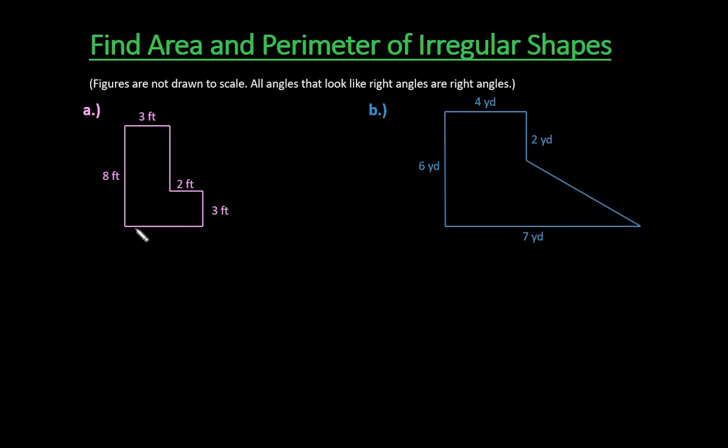For these, they are rectangles, so all of these angles that look like a right angle are indeed right angles. When you have something like this, we can see that this is two rectangles put together. I'm going to split it up into two rectangles this way, mainly for when I get to the area.